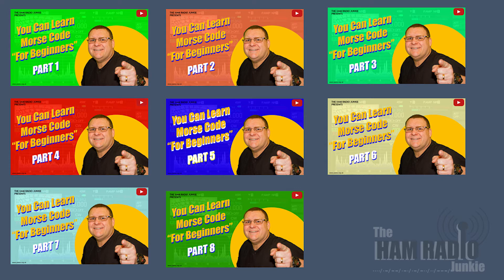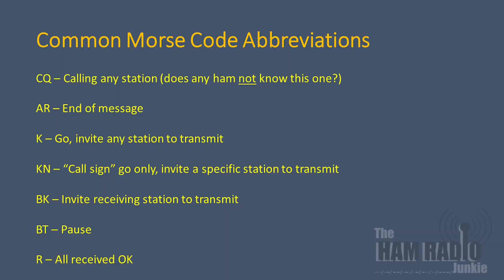When we send Morse, we use a lot of abbreviations because it's far easier to send small characters than whole words. The majority of abbreviations are either a single letter, or two or three letters combined.